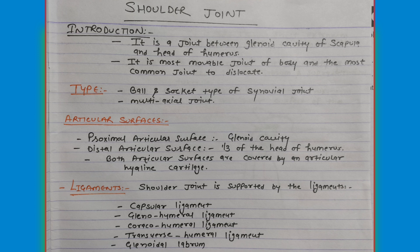The second heading is the type of joint. The shoulder joint is a ball and socket variety of synovial joint, and it is a multi-axial joint.